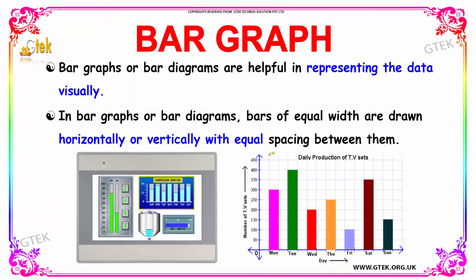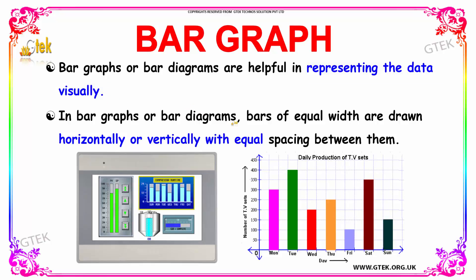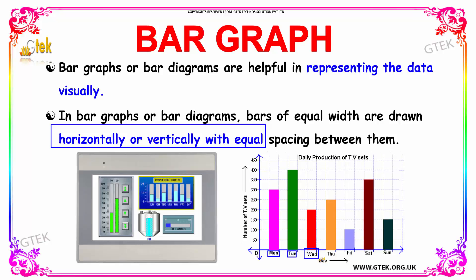Bar graphs or bar diagrams are used in scenarios where you have to represent data visually. The bars of equal width are drawn horizontally or vertically with equal spacing between them. For example, the variables can be Monday, Tuesday, Wednesday, and so on, each having equal distance between them horizontally and vertically.